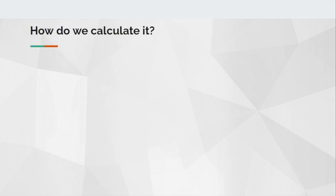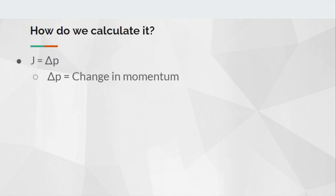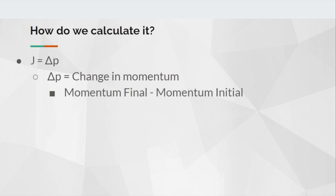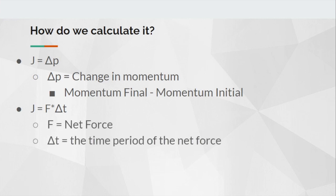How do we calculate impulse? Impulse, represented by the letter J, is equal to delta P, which means impulse is equal to the change in momentum. Another way to calculate it is that impulse is equal to force times delta T, where force is our net force and delta T is the time period of that net force.